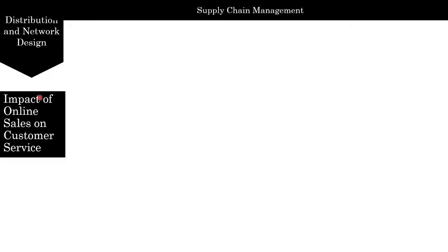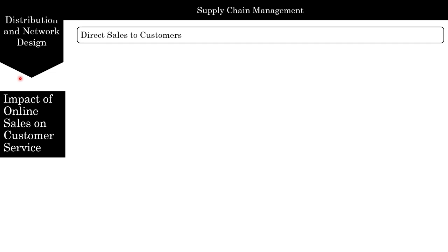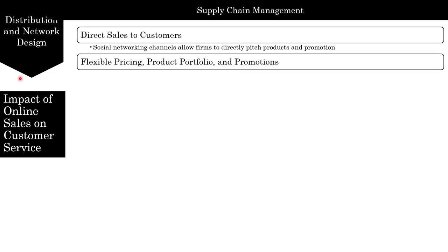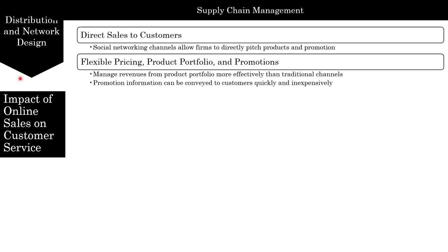Continuing with the impact of online sales on customer service: the internet allows manufacturers and other supply chain members who do not have direct customer contact in traditional channels to get customer feedback and build relationships. Social networking channels such as Facebook and Twitter allow firms to directly pitch products and promotions to customers. Regarding flexible pricing, product portfolio, and promotions, the internet allows a company selling online to manage revenues from its available product portfolio much more effectively than traditional channels. Promotion information can be conveyed to customers quickly and inexpensively using the internet.